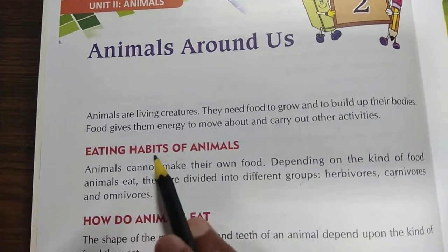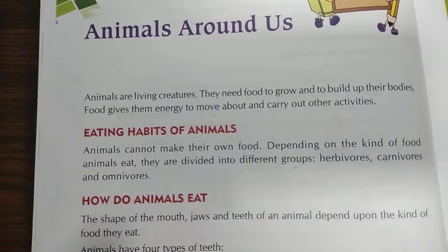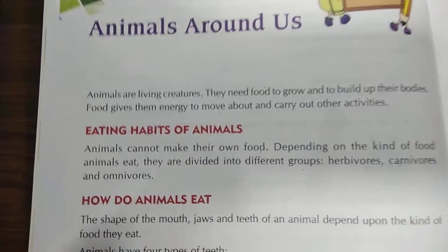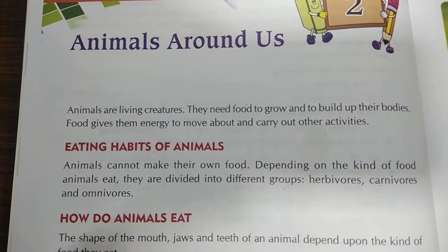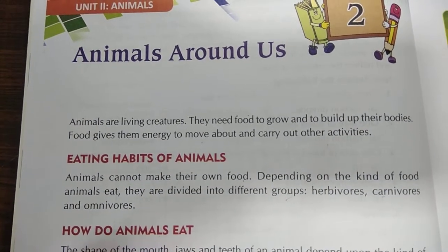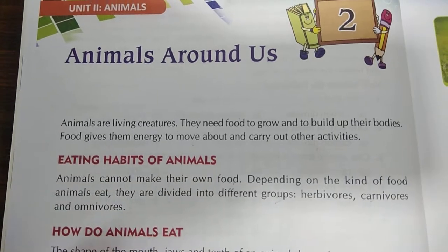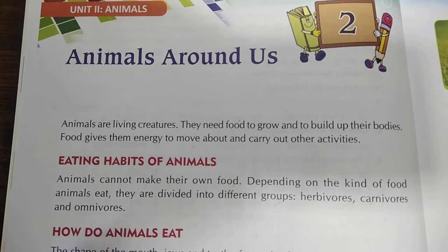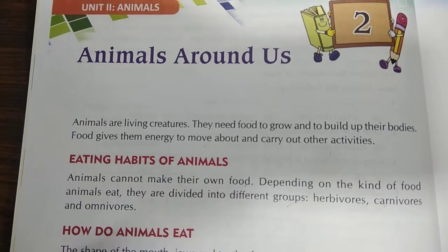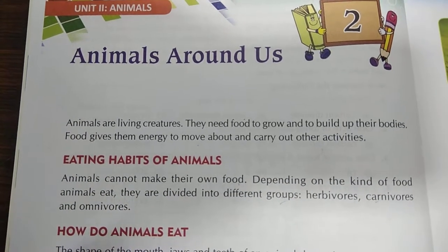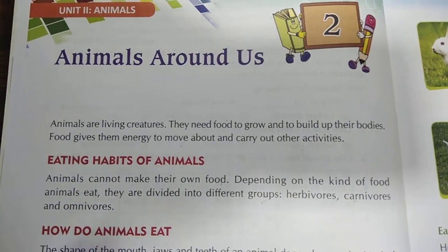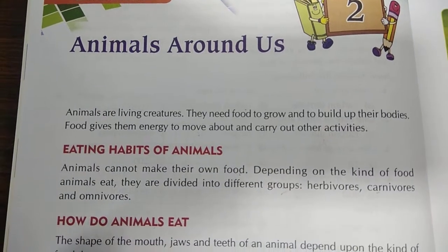This is the next heading: Eating Habits of Animals. Animals cannot make their own food. Depending on the kind of food animals eat, they are divided into different groups. Depending on their eating habits, they are divided into three groups: one is herbivores, second is carnivores, and third is omnivores.